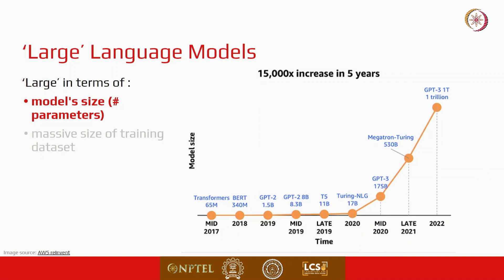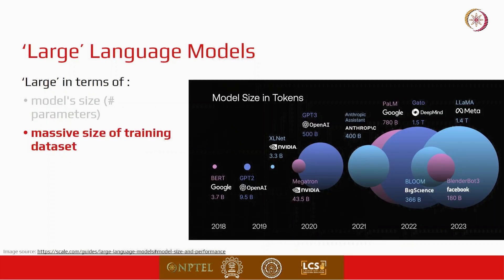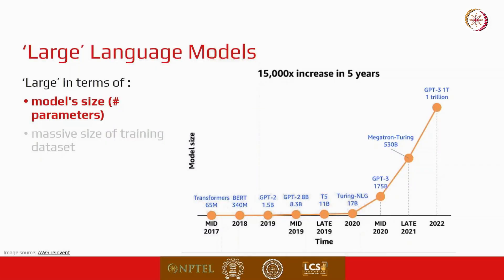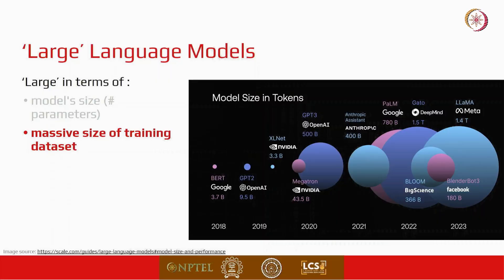So, what is large in large language models? When we say large language models, there are basically two aspects. One is the size of the model in terms of number of parameters, and the other is the size of the training dataset on which these models are trained. Earlier models from 2017 and 2018 had a size of roughly 65 million to 100 million parameters, and now we are talking in terms of trillions. GPT-3, for example, is a 1 trillion model. The second aspect is the size of the training dataset. Earlier models used a dataset of size 1.7 billion tokens, whereas the models we have been witnessing these days use more than 300 billion tokens for training.